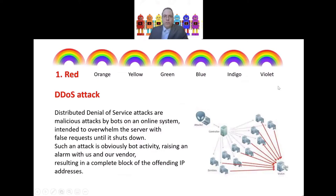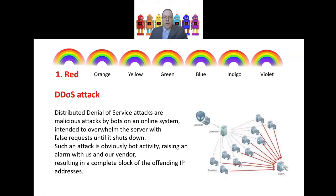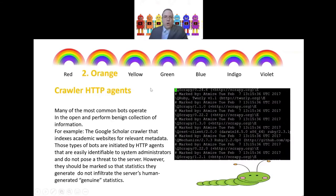The red level is the easiest to detect: a DDoS attack — distributed denial of service. This is no-nonsense malicious activity by machines. DDoS attacks are malicious attacks by bots on an online system intended to overwhelm the server with false requests until it shuts down. Such an attack is obviously bot activity, raising an alarm with us and our vendor — our DSpace vendor — resulting in a complete block of the offending IP addresses. The OKR is built on DSpace and our vendor cooperates with us in locating bot attacks like this case.